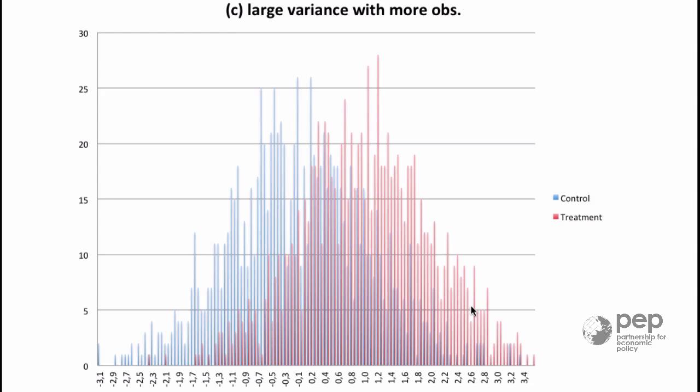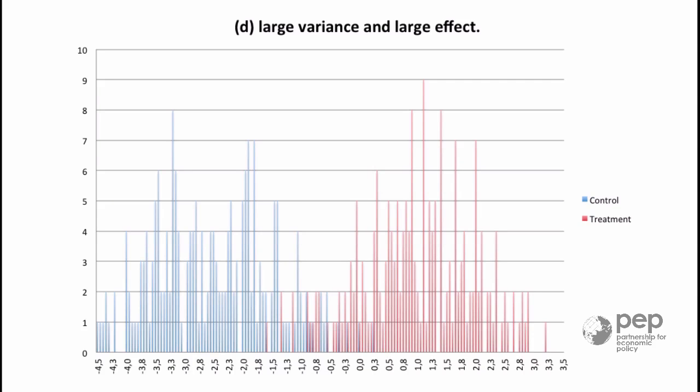In some cases however even if your outcome variable has this much noise when the program effect is very large you don't need too many observations. In this graphic for example we are able to recognize the treatment effect only with 200 observations but this is because the effect is way larger.